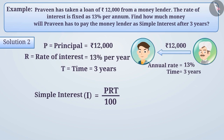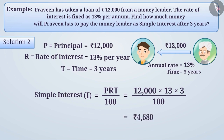Therefore, simple interest I = 12,000 × 13 × 3 / 100, which is equal to Rs 4,680. That is, after 3 years, Praveen will pay Rs 4,680 as simple interest to the money lender.